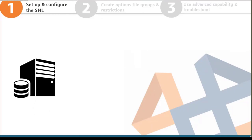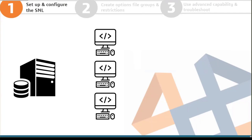The first thing is setting up and configuring the SNL — the Solid Network License Manager. This is the server that holds all of your licenses. It communicates with all the clients, normally over ports 25734 and 25735, dishes out licenses, and you can control who gets what licenses using the options file. You have a main server computer that all other computers communicate with over these ports to give and receive network licenses.